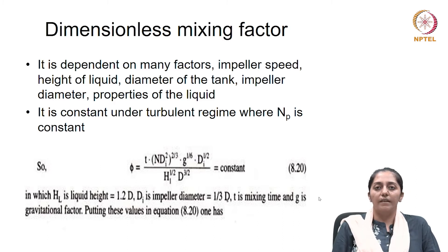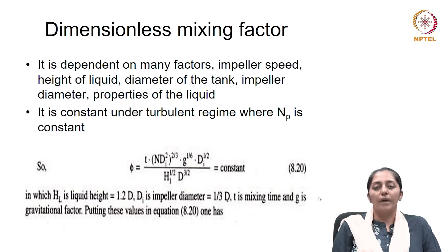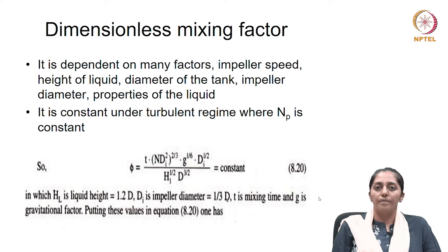Now the third criteria will be the dimensionless mixing factor. This is dependent on many factors like the impeller speed, height of the liquid in the vessel, diameter of the tank, impeller diameter, and the properties of the liquid. It is to be constant under the turbulent regime where the power number is constant. So dimensionless mixing factor can be considered as constant in the turbulence regime where the power number is also constant.